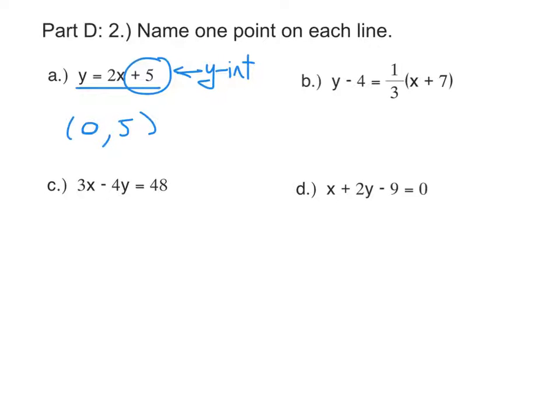In the second one, this is point-slope form. So this will tell us what the x-coordinate of a point is, and this will tell us what the y-coordinate of a point is.